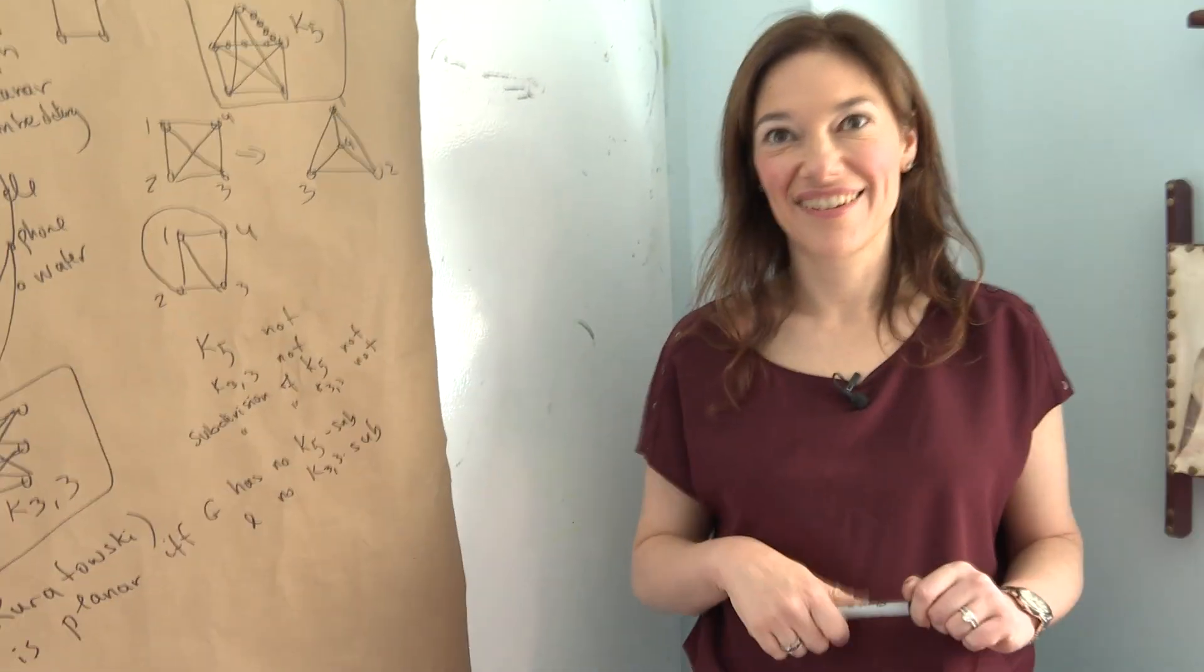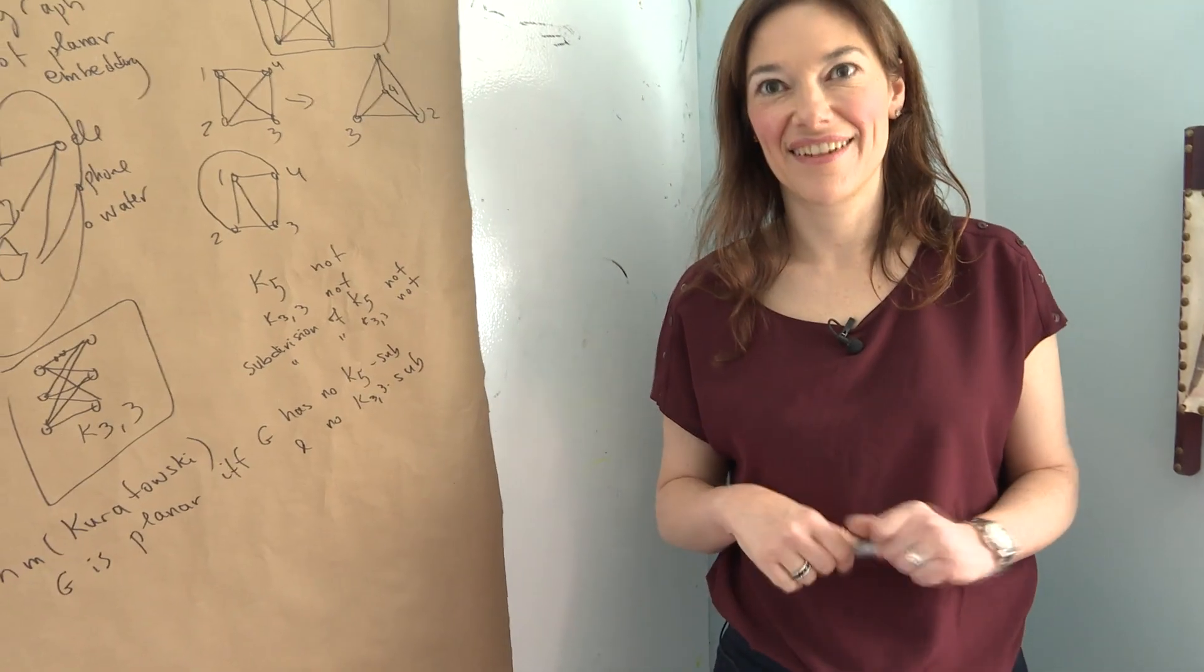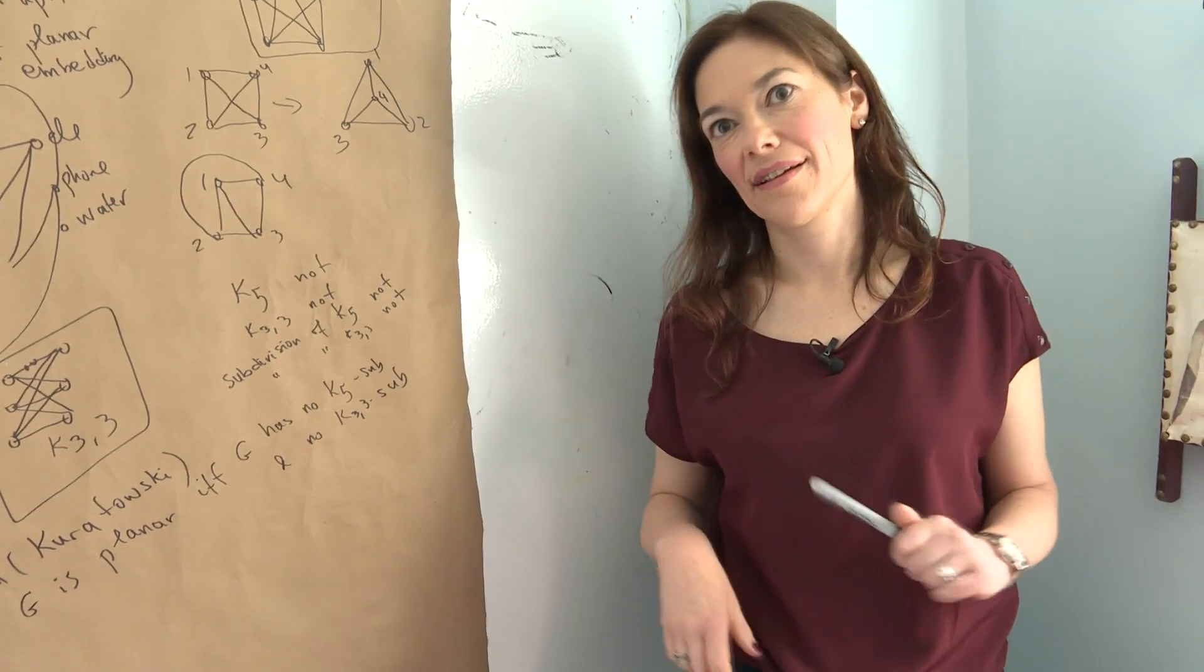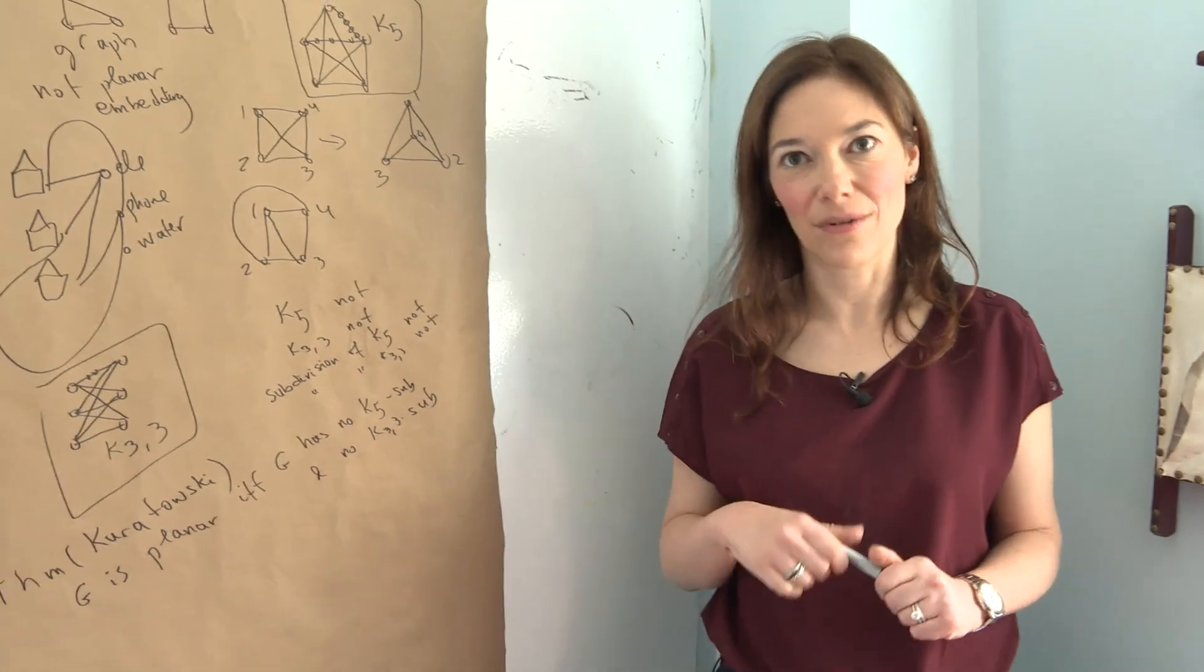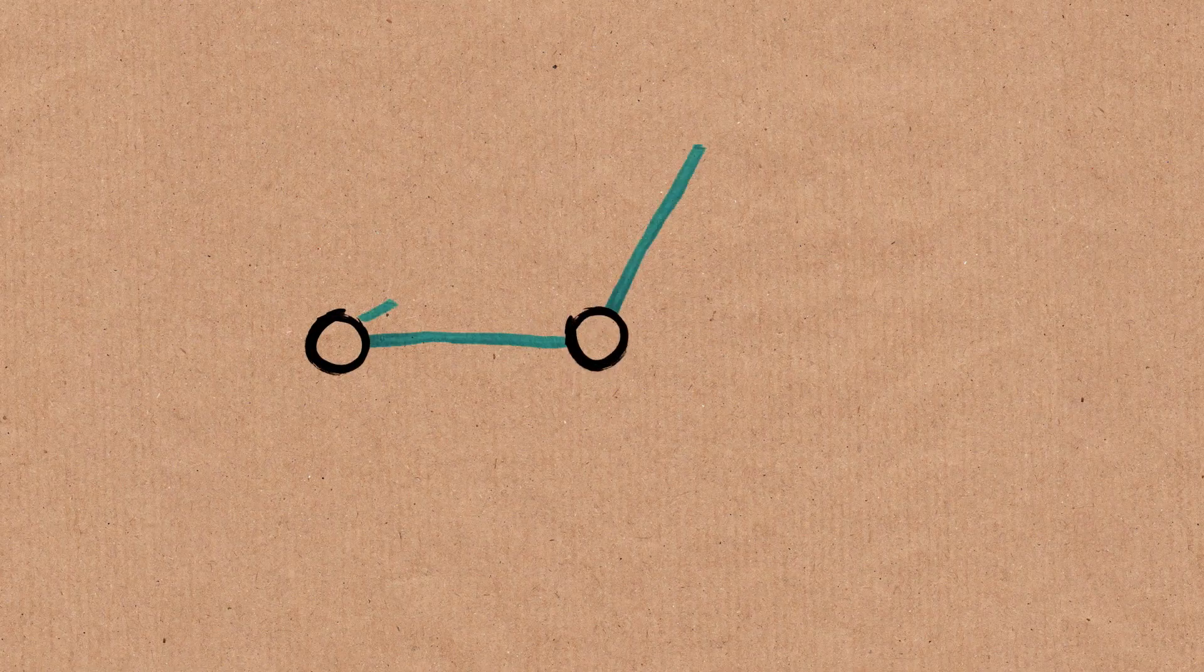So every single graph, if I drew you the most complicated graph in the world and it was non-embeddable, you'd be able to find that in there somewhere. That is correct. That's the only reason something is not embeddable. So these graphs are very special.